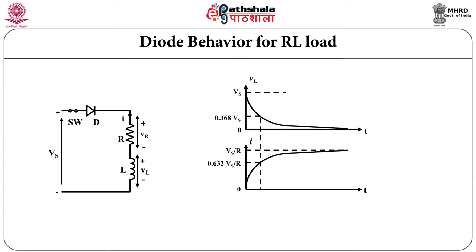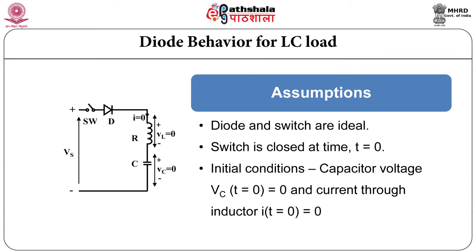This is exactly opposite to the capacitor. Therefore if there is RL load and voltage is connected abruptly, there will be occurrence of large voltage transients. Next is diode behavior with LC load.